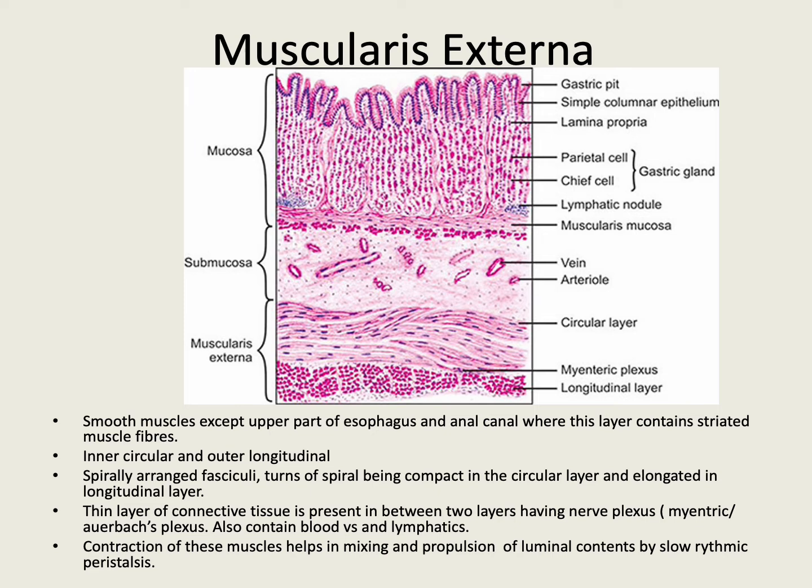A thin layer of connective tissue is present between the two muscle layers. It contains a plexus of nerves called the myenteric plexus or Auerbach's plexus, as well as blood vessels and lymphatics. The contraction of the muscles in this layer helps in mixing and propulsion of luminal content by slow rhythmic movements called peristalsis.